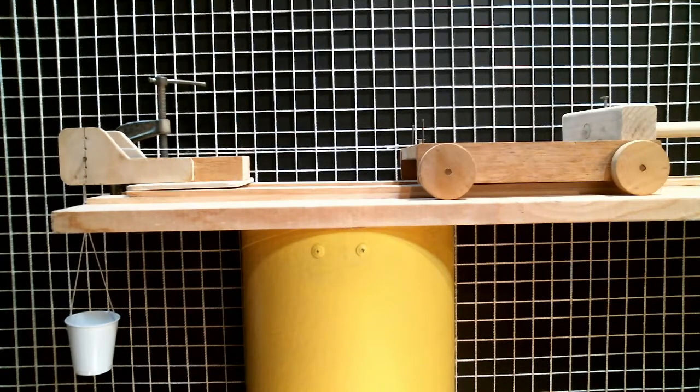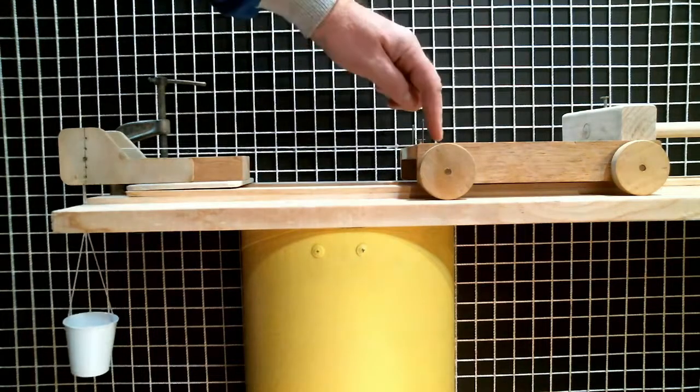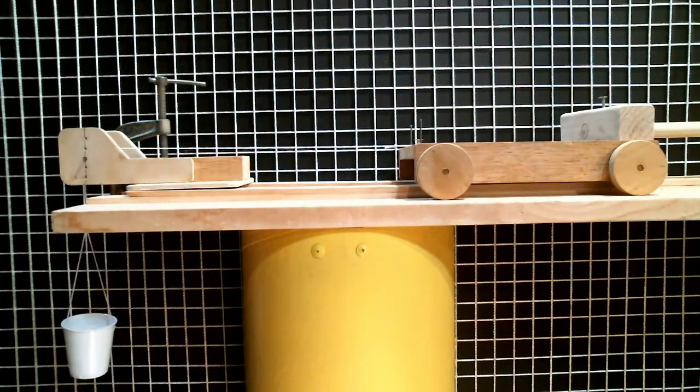Now let's determine the force that's needed to compensate for the dynamic friction of the cart. I'm going to add one penny at a time to my cup and give a small impulse to the cart. If the cart stops moving, then I need more force. If the cart continues to roll all the way to the stops, then that's roughly the force needed to overcome the dynamic friction. One penny, small impulse, cart stops.